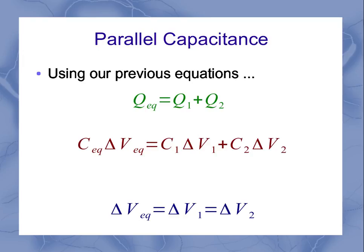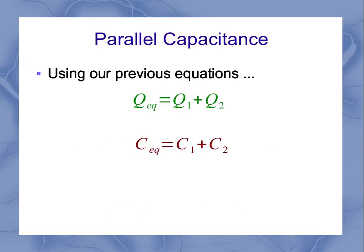But the voltages are all the same, so we can divide and cancel that out, leaving the equivalent capacitance equal to C1 plus C2.